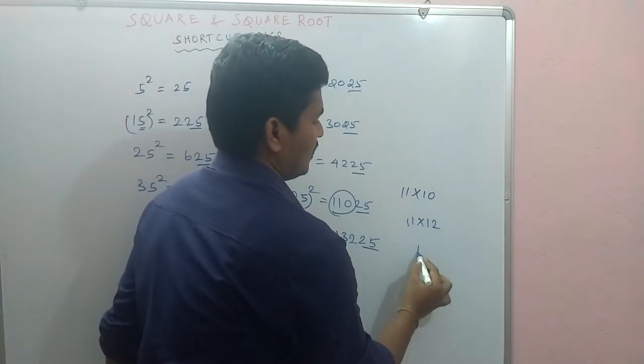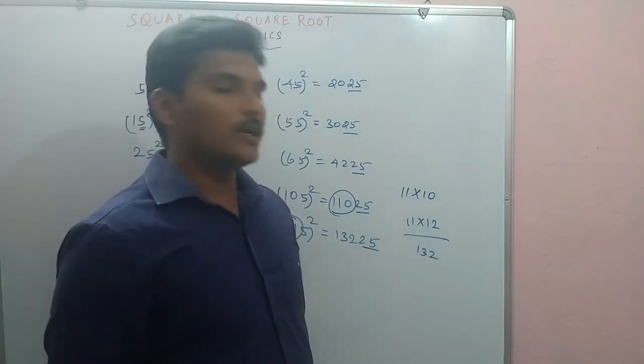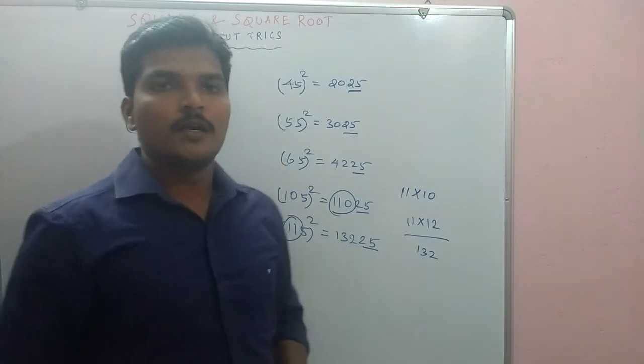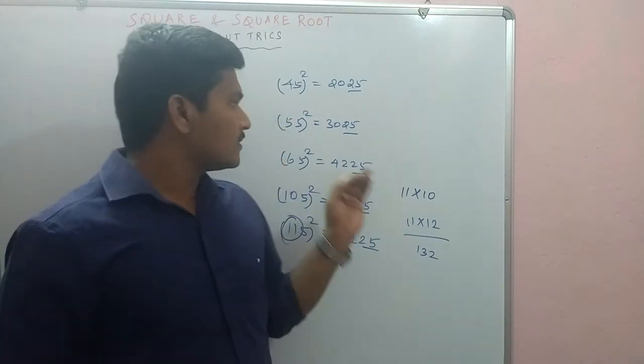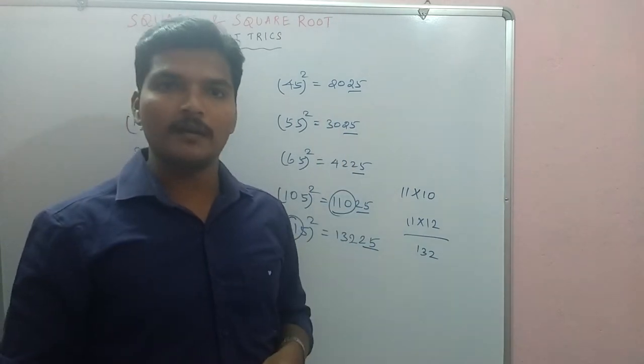Then how about 25? You have 2, 2 times 3. The answer is 6, then 25. If you have this method, the answer comes quickly.